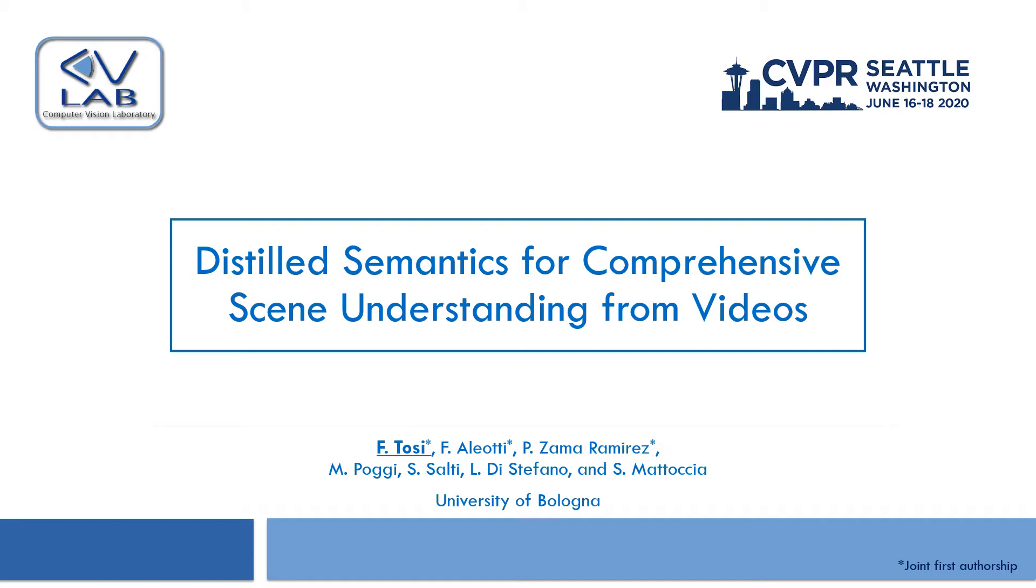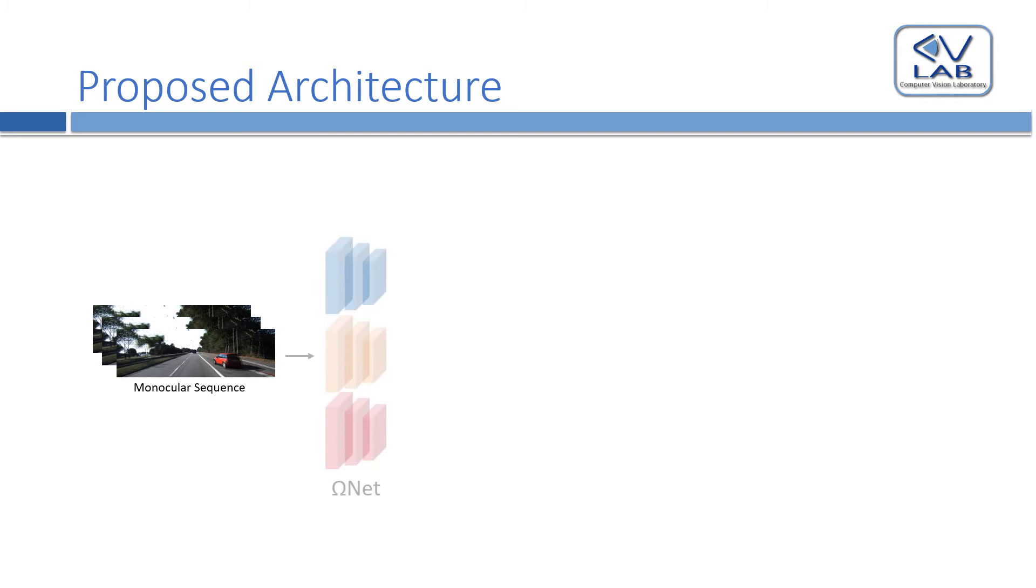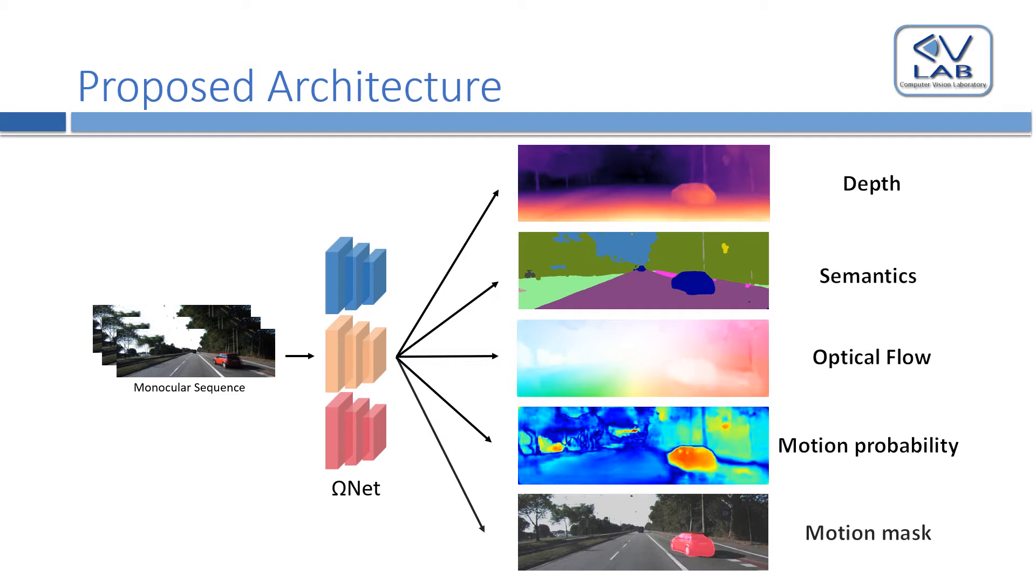Our multistage network, named Omeganet, estimates depth, semantics, optical flow, per-pixel motion probabilities, and motion masks.